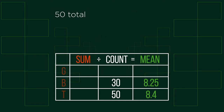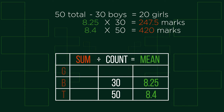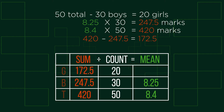As there are 50 people in total and 30 boys, there must be 20 girls. We now need to work out the sum marks for the total students and the boys. Because we divide to find the mean, the reverse should give us the sum, so we multiply the mean of each by their count. We can put this information into our table. Because the total sum marks come from the sum of the boys' and girls' marks, we can subtract the boys to find the girls' total marks and the first part of our answer: 172.5.